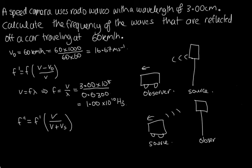And this is also equal to 16.67. It's still travelling at 60 kilometres per hour. So let's put these two together now. We've got f double dash. The frequency detected at the speed camera is f dash, which is f times v minus v o over v times v over v plus v s. We simply put this expression here in instead of the f dash here.